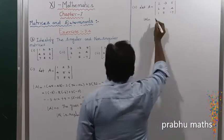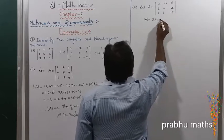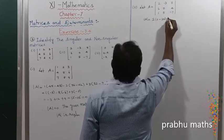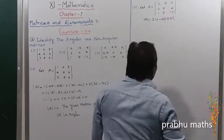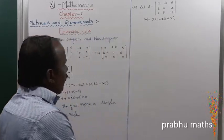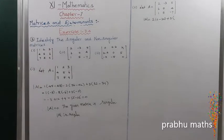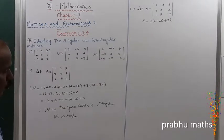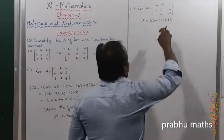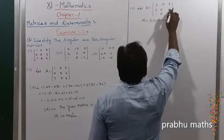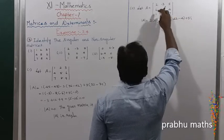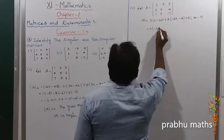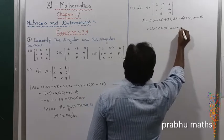det(A) is equal to 2 into the first diagonal product, which gives 0, minus the second diagonal product, which gives minus 20. Next, minus 3 into the submatrix; the first multiplication gives 40, minus 42, so the value is minus 4. Next, plus 5 into the submatrix; the first multiplication is 30, minus 0. So det(A) equals 2 into (minus 20), plus 3 into (minus 4), plus 5 into 30.